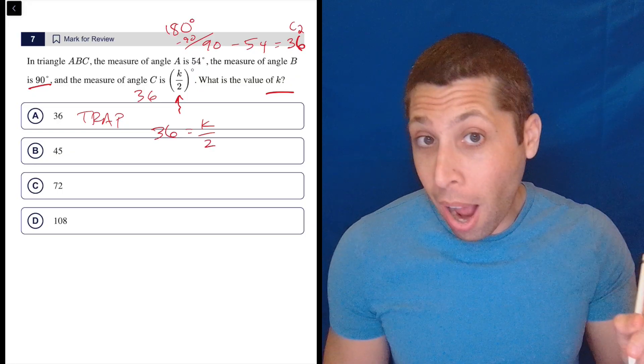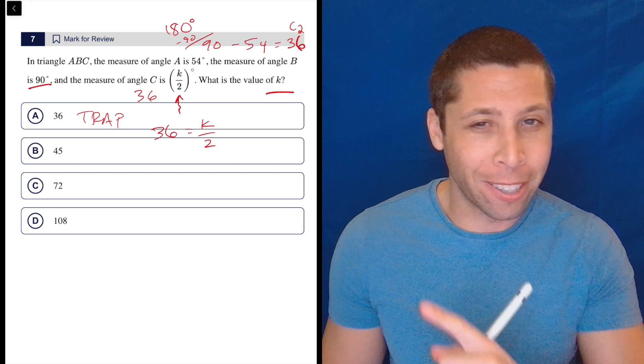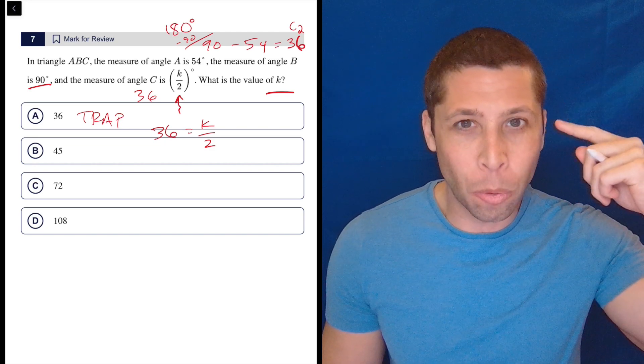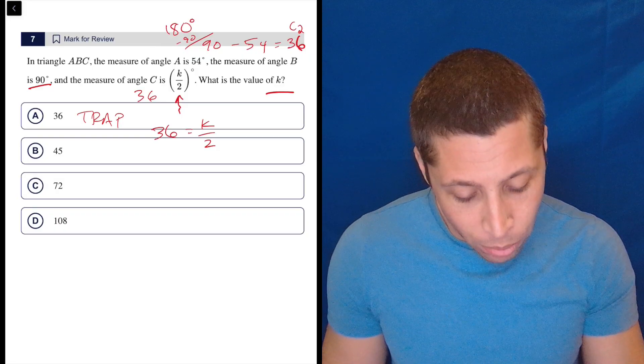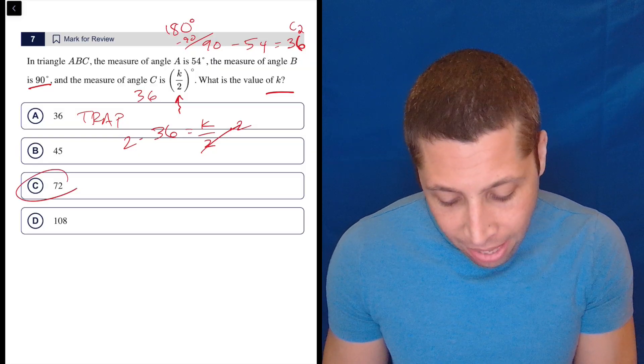So I'm actually surprised that 18 is not an answer here. If I were writing this question, I would have put 18 as an answer because some people are going to have a little wire cross in their brain. They're going to go 36 divided by 2 is 18. That's the value of K. But no, we have to multiply both sides by 2. And now we get K is 72.